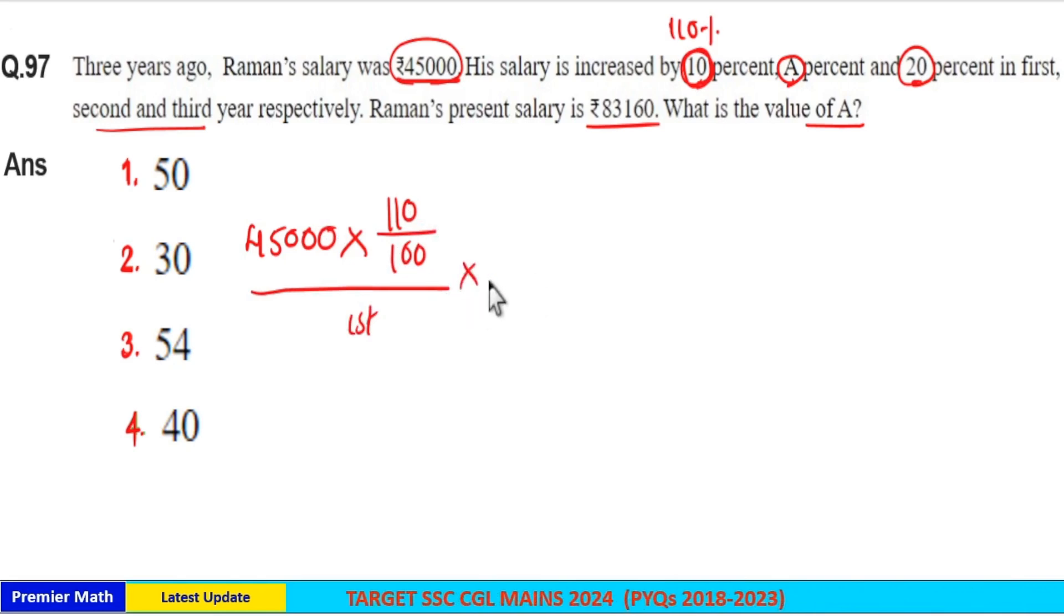Now in the second year, increment is 8%. If I take first year salary as 100%, then 100 plus 8% is the increment in the second year. So 100 plus 8% of first year salary is the second year salary.